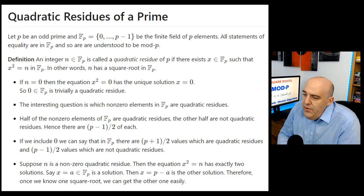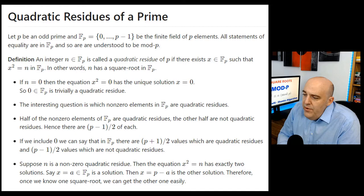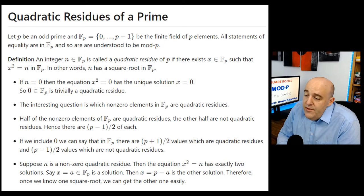An important definition: an element n of fp is a quadratic residue of p if there's some element x in fp such that x squared equals n. In other words, n has a square root in fp — there is an element such that when you square it, you get n. That's sometimes true and sometimes not true.